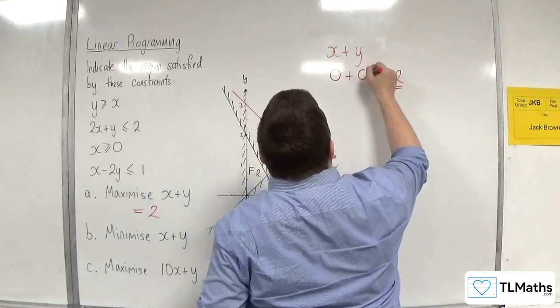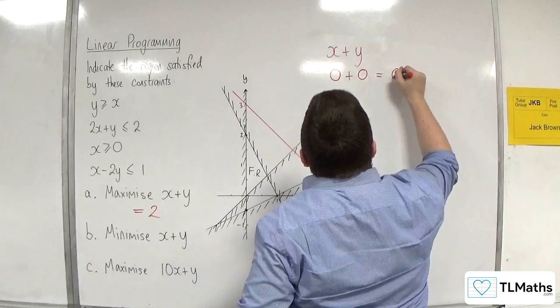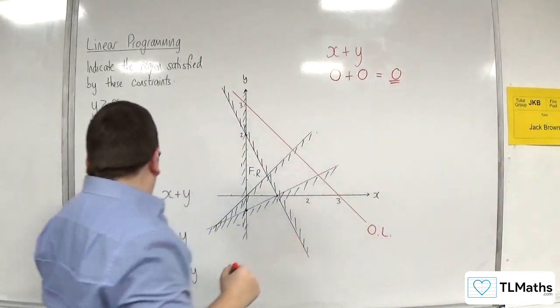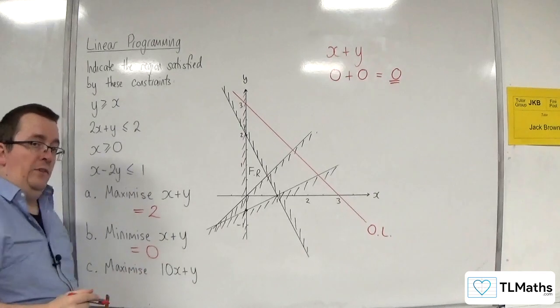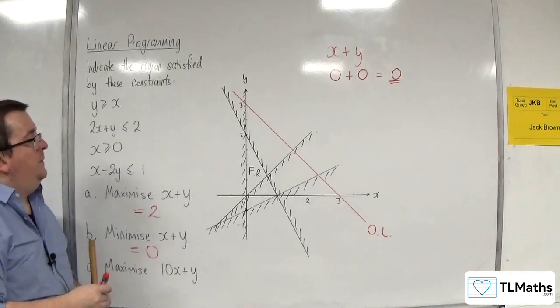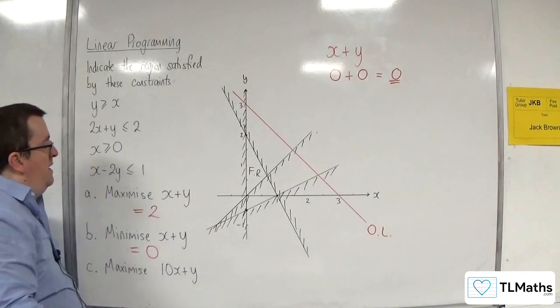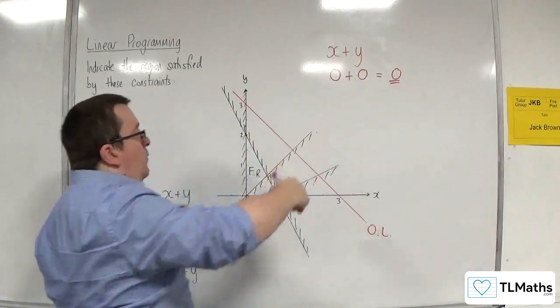So, 0, 0, of course, would give you 0. So, to minimize X plus Y, it would be 0. So, you're coming from the bottom left when you're minimizing, and the top right when you are maximizing.